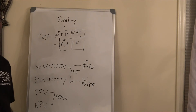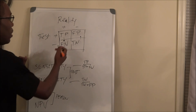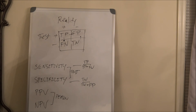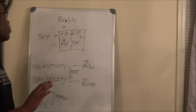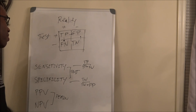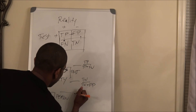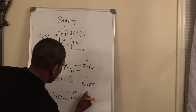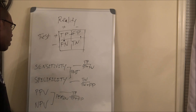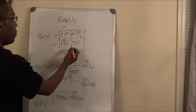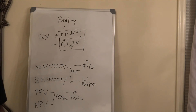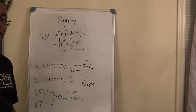For positive predictive value, you're going to go across, and that's going to be true positives divided by true positives plus false positives. The equation for negative predictive value, you go across in the opposite direction, and that's going to be true negatives divided by true negatives plus false negatives.